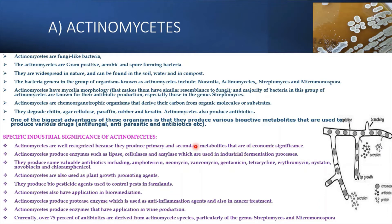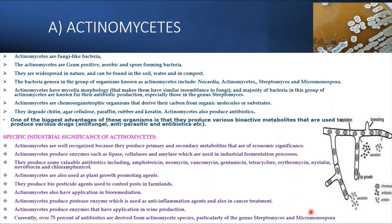Actinomyces are also used as plant growth promoting agents to enhance plant growth. They produce biopesticide agents used to control pests in farmlands and have applications in bioremediation. They produce protease enzymes used as anti-inflammatory agents and in cancer treatment. Actinomycetes also produce enzymes with applications in wine production. Currently, about 75% of antibiotics are derived from actinomycetes species, especially Streptomyces and Micromonospora, which are used in the production of antibiotics. This is the specific industrial significance of actinomycetes.